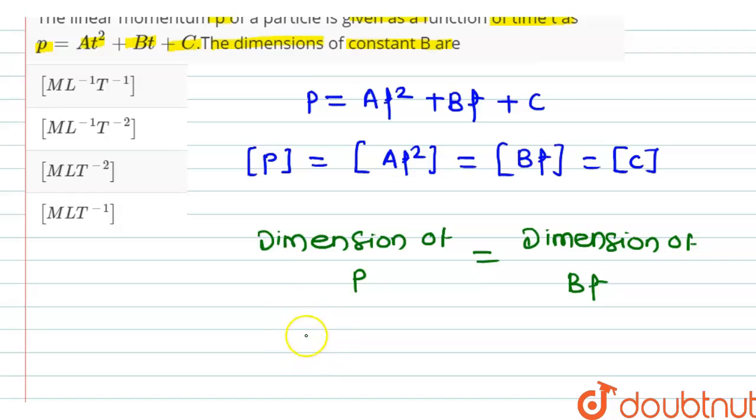So its dimensions are m1, l1, t minus 1, which will be equal to b into dimension of t or t1.